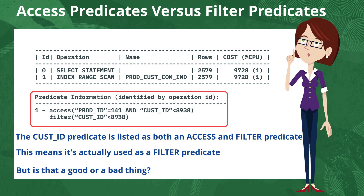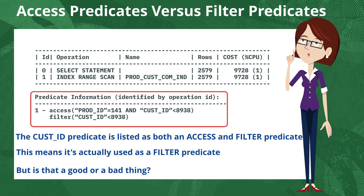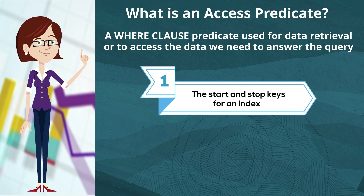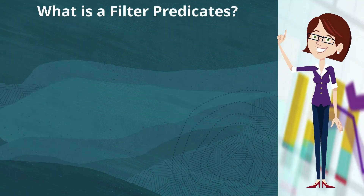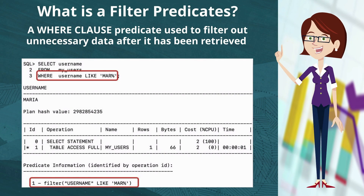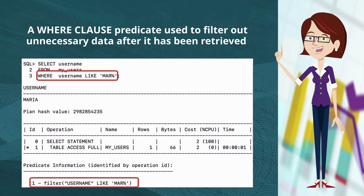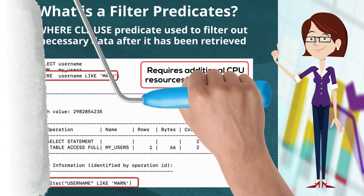So is that a good or a bad thing? In order to understand this more, we need to know exactly what it means to be an access versus a filter predicate. An access predicate is a where clause predicate that's used for data retrieval — to access the data needed to answer a particular query. For example, it could be the start or stop key for an index, or a set of row IDs being passed to a full table scan. On the other hand, a filter predicate is a where clause predicate used to filter out unnecessary data after it's been retrieved. So in this example, we'll actually do a full table scan on my users before applying the where clause predicate on username. Applying the predicate after the data access does require additional CPU to do that filtering and therefore can increase the cost of an index access.